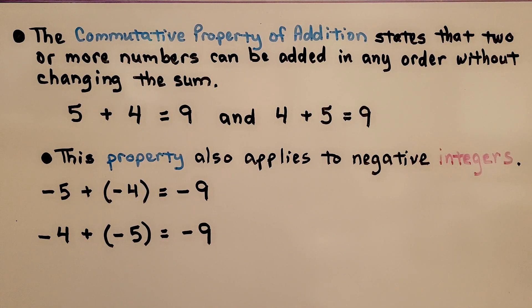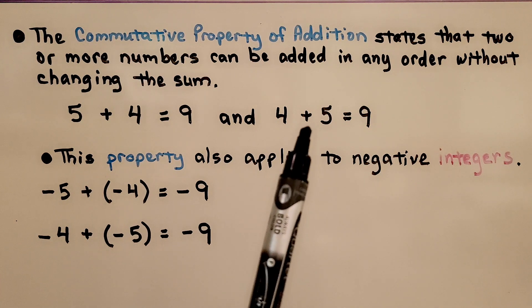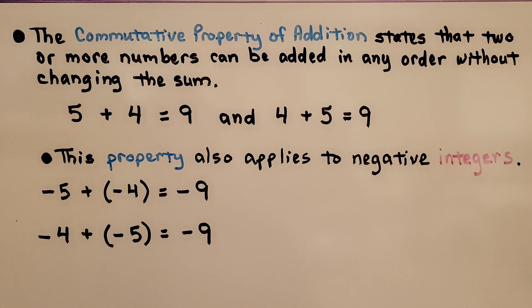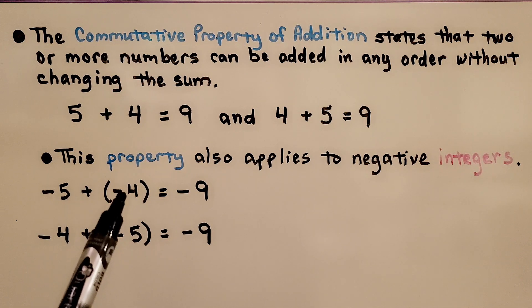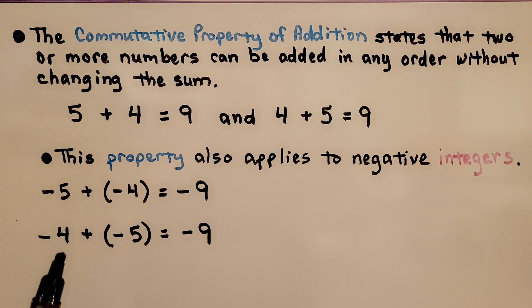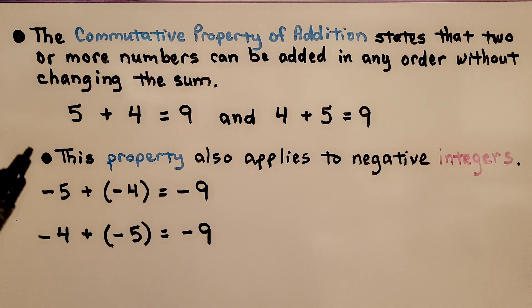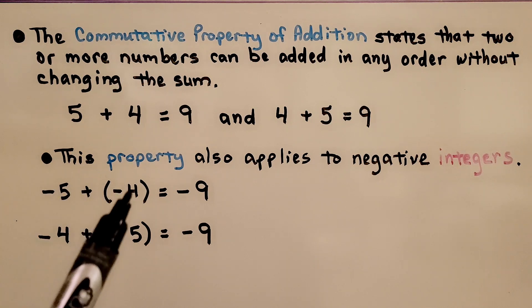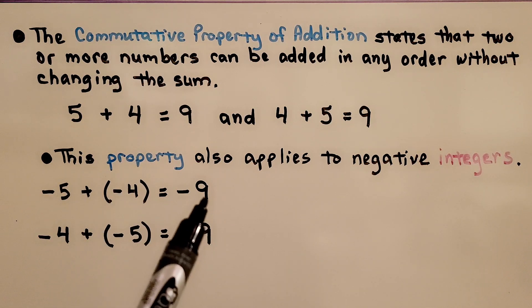The commutative property of addition states that two or more numbers can be added in any order without changing the sum. 5 plus 4 equals 9, and 4 plus 5 equals 9 — it doesn't matter the order. This property also applies to negative integers: negative 5 plus negative 4 equals negative 9, and negative 4 plus negative 5 equals negative 9. The absolute values would be 5 plus 4, which is 9, and they both have a negative sign, so the sum has a negative sign.